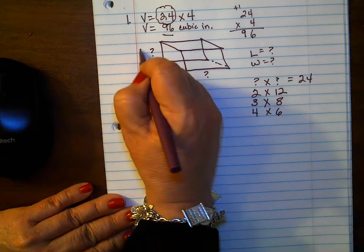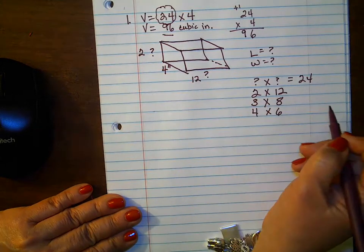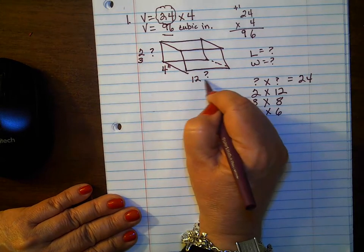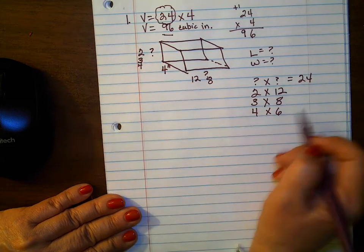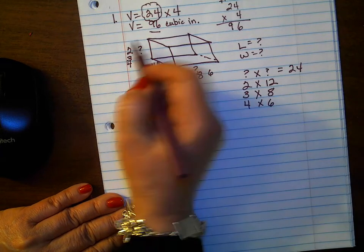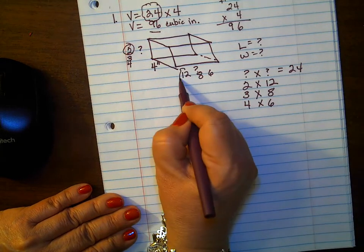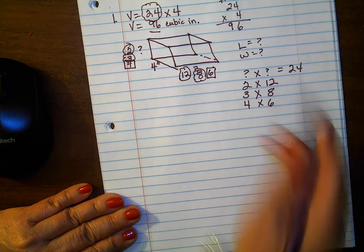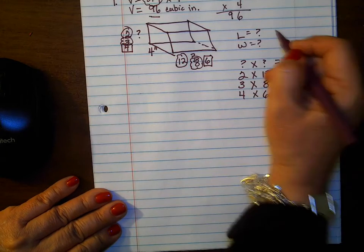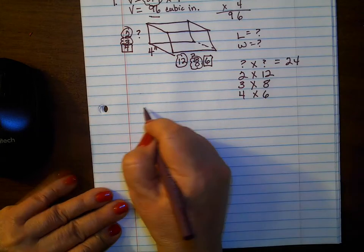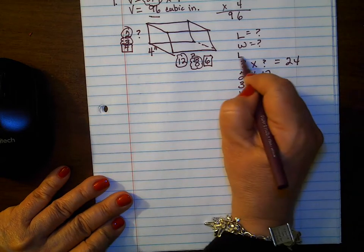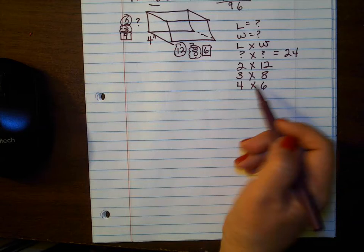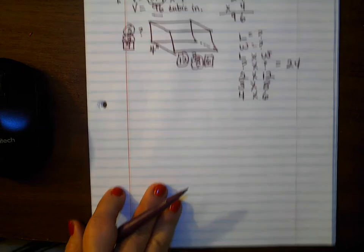So the height can be 2 inches and the length can be 12. Or it could be 3 inches and the length could be 8. Or it could be 4 inches and the length could be 6. Any of these combinations can work. The length times width could be 2 and 12, 3 and 8, or 4 and 6. Those are the different combinations. Let's look at number 2.